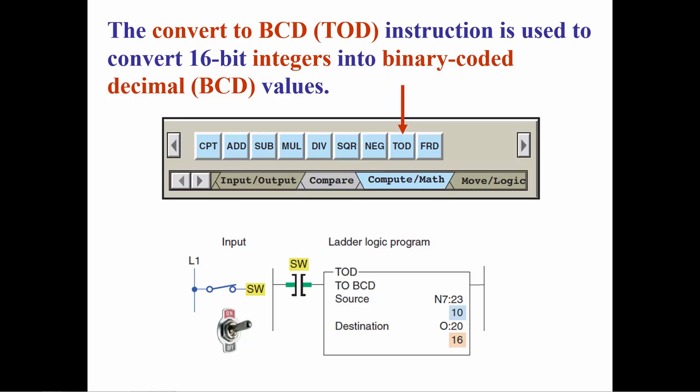The 2BCD instruction, or TOD, converts a 16-bit integer to a binary coded decimal equivalent. The source is the integer and the destination is the BCD value.